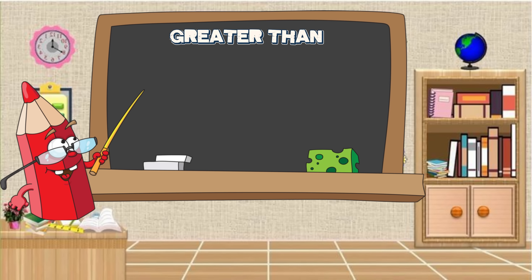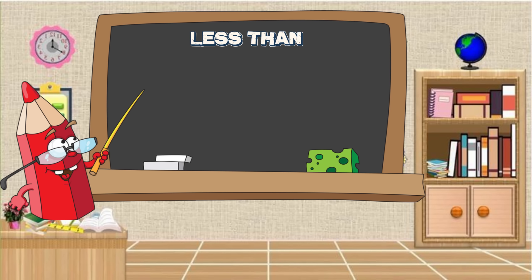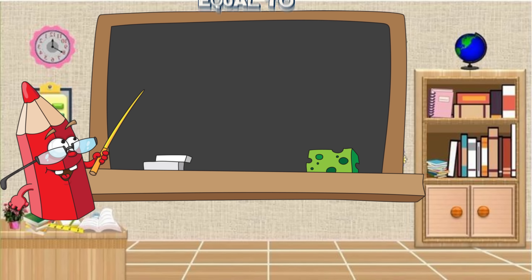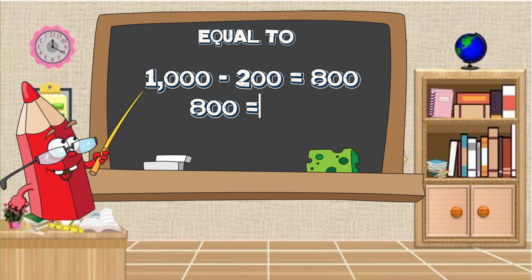Greater than: five thousand is greater than four thousand. Less than: ten thousand is less than one hundred thousand. Less than: one hundred is less than two hundred. Equal to: one thousand minus two hundred is equal to eight hundred, or eight hundred is equal to eight hundred.